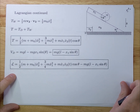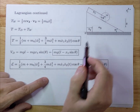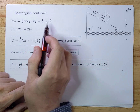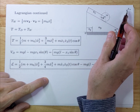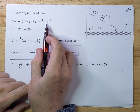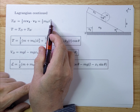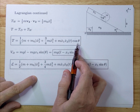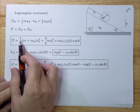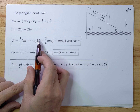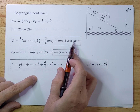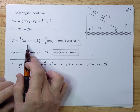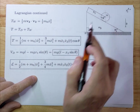Now we look at the kinetic energy of the wedge, because the wedge is also moving. That's simply half mv squared for the wedge, and since it's only moving in the x-direction, you get half m0 x2dot squared. Adding them up gives you the total kinetic energy of the system — both the wedge and the disk.